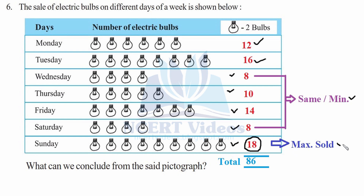The maximum number of bulbs sold in any single day of the week is 18, on Sunday. When we add all daily sales together, the total sales for the week are 86 bulbs. These are the conclusions we can draw from this pictogram. This was question 6.